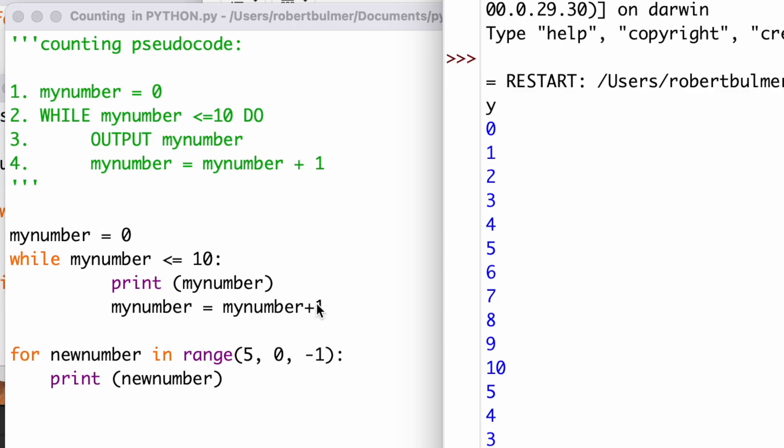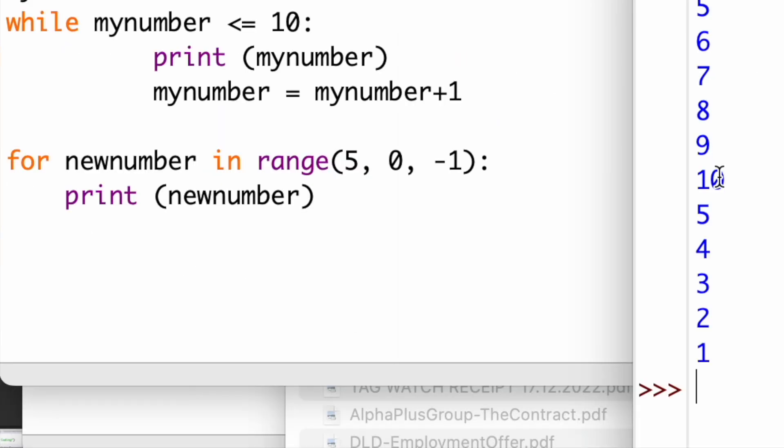The first one counting, if I run this program we can see that my number equals zero to start with. While my number is less than or equal to 10, print my number. But then the counting side of things, my number equals my number plus one. So every time it runs through this loop it has one to my number, so it's going to count from one all the way to 10. And then when it gets to 10 it's going to stop because it will only run the loop if it's less than or equal to 10. Now for this one, we use a for loop for a new number in range. We're going to start at five, we're going to end at zero and we're going to count down in increments of minus one. Print the new number so it's going to go five, four, three, two, one as before.